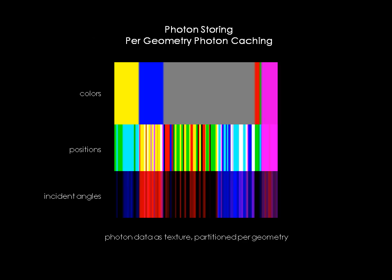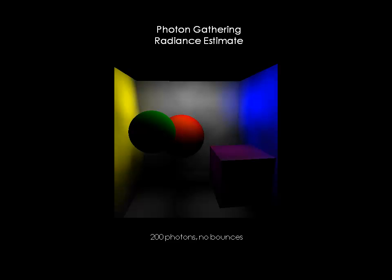Photons are stored at the surface of each object per object. This is done through partitioning the global photon array into sections associated with each object. The data is then passed down to the shader as a texture. Once photons are stored, they are ready to be looked up at render time. The output color is computed through obtaining a radiance estimate, which is done by summing up the power of nearby photons on a surface.